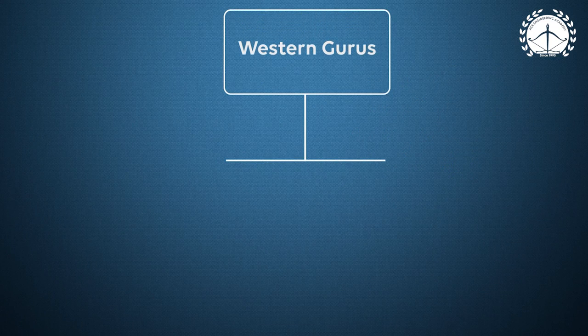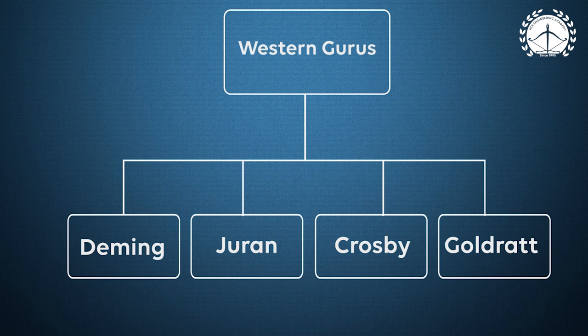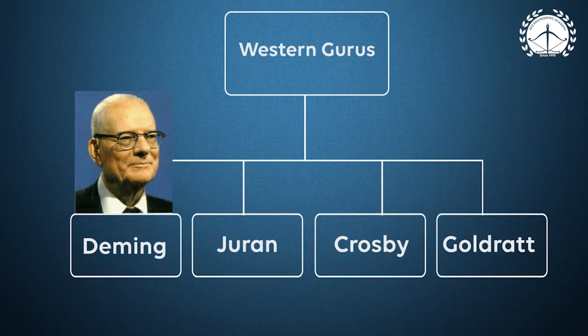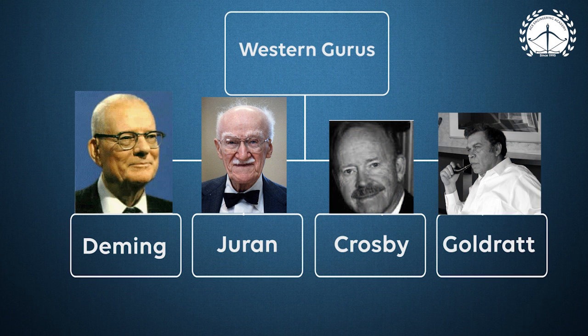Quality has evolved because of contributions from quality gurus, broadly classified as western and eastern. The most prominent western guru is Deming, who is highly rated in Japan because he was instrumental in the Japanese quality revolution — Japan's quality award is named after him. Apart from Deming, other quality gurus include Juran, Crosby, and Goldratt. Goldratt Elihu is a more recent one from Israel, who gave the concept called Theory of Constraints; his famous book is 'The Goal.'